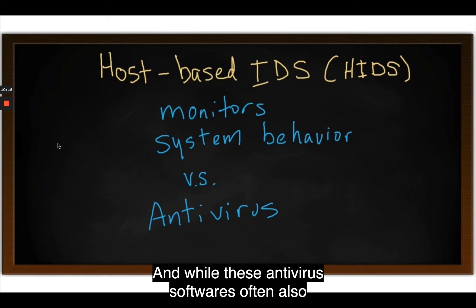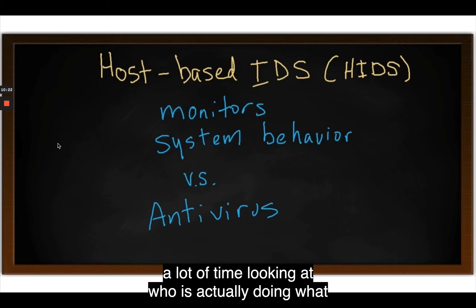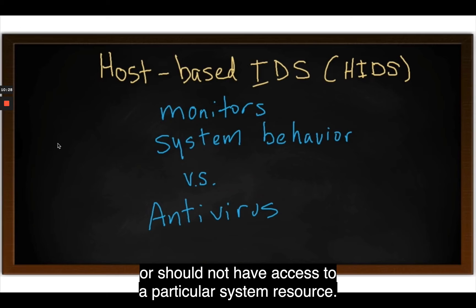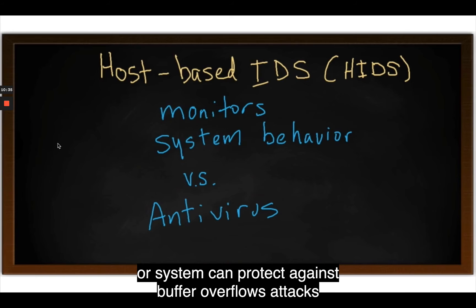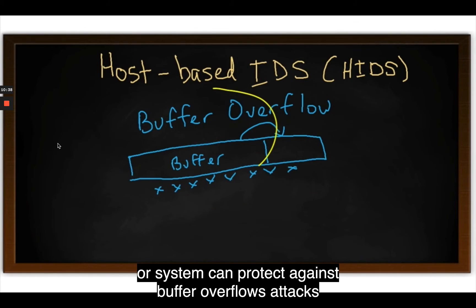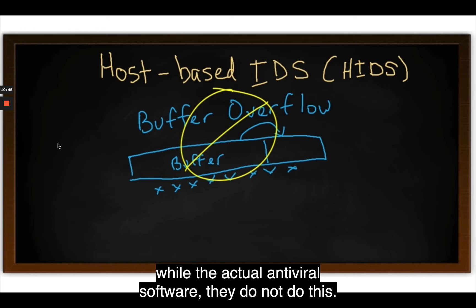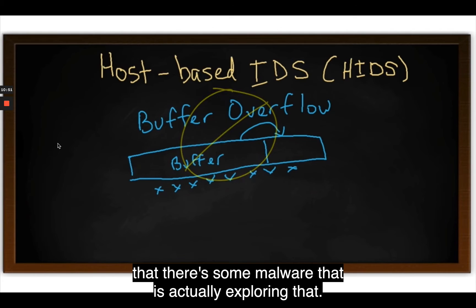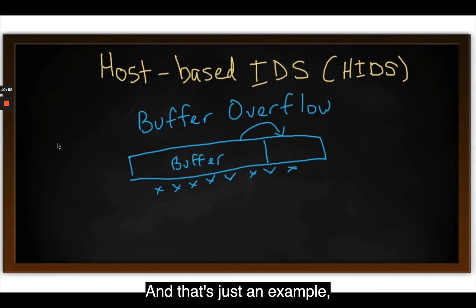While antivirus software often also monitors system states, it does not spend a lot of time looking at who is actually doing what inside of a computer and whether a program should or should not have access to a particular system resource. For example, a host intrusion detection system can protect against buffer overflow attacks on system memory and also enforce security policies, while antivirus software cannot dynamically detect buffer overflow attacks unless they have a specific malware signature.